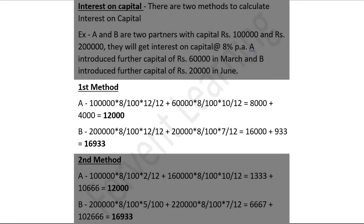Similarly in case of B: two lakh is the first investment and B will get eight percent rate of interest, that is eight by hundred, for the full year, twelve by twelve. Again, rupees twenty thousand invested by B in the month of June. From June to December there are seven months, so twenty thousand into eight by hundred into seven by twelve. From the first calculation we get sixteen thousand, and from the second we get nine hundred thirty-three. Total interest on capital of B is sixteen thousand nine hundred thirty-three.